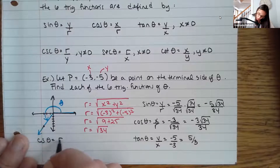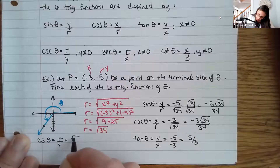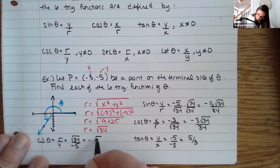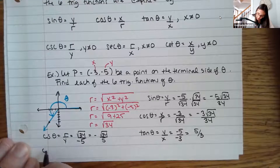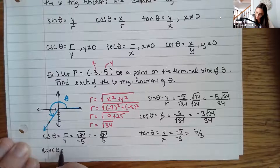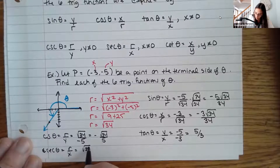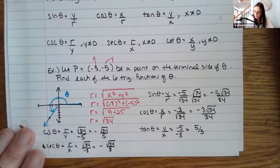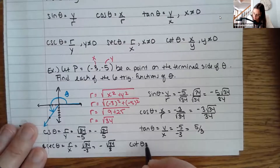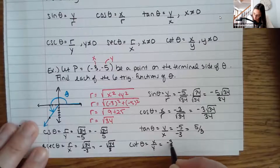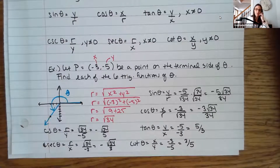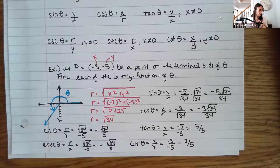Moving over for a bit of extra room: cosecant is r over y, so root 34 over negative 5 — you can put the negative out front if you like. Secant is r over x, so root 34 over negative 3, and again you can put the negative out front. Cotangent is x over y: negative 3 over negative 5, which is 3 fifths. So we can find all six trig functions very similarly to how we've done before when working with angles less than 90 degrees.